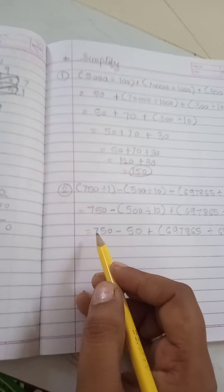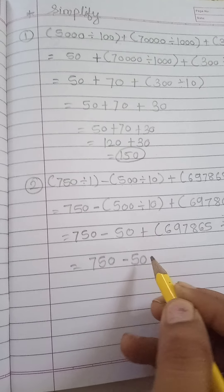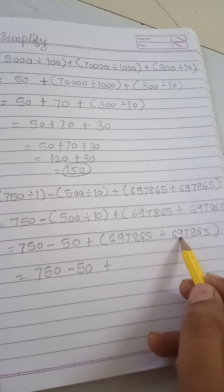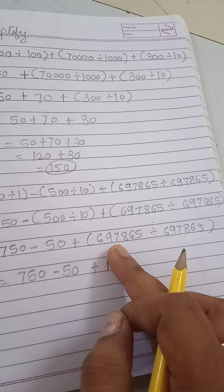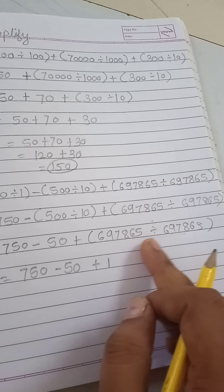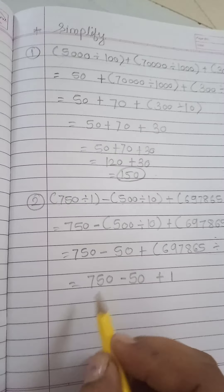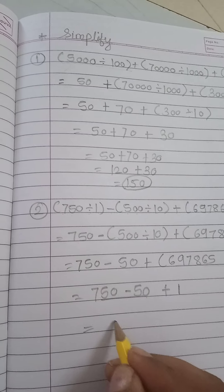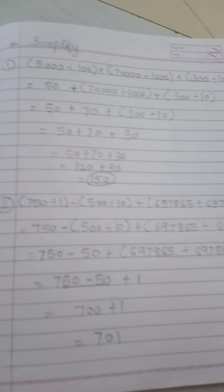Second step is complete. Now see the third step: 750 minus 50, plus when the numbers are the same and we divide, the answer is 1. So 6097865 divided by the same number gives 1. Make the subtraction first: 750 minus 50 is 700, plus 1. The answer is 701.